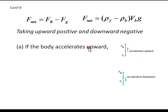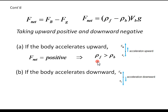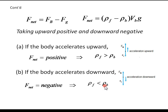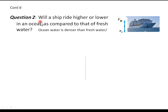If the body is accelerating upward, the acceleration and net force have the same direction, so we conclude that density of the fluid is greater than density of the body. But if it accelerates downward, the net force is negative, and therefore the density of the fluid is less than the density of the body.